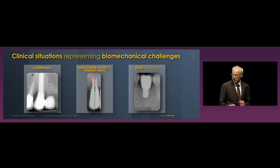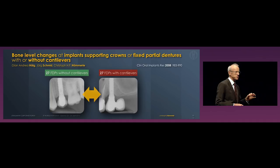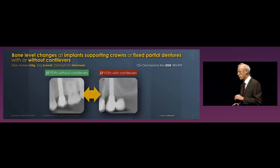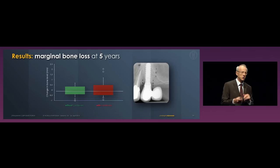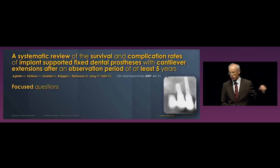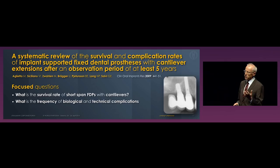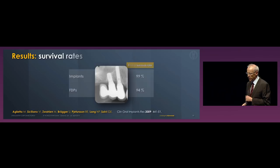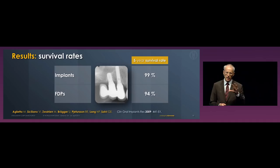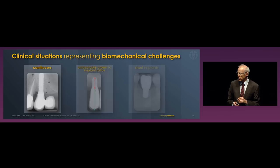John-Andrea Held from our department, in the practice of Jörg Schmid, did a study: 27 fixed dental prostheses with cantilevers compared to 27 without, about five years of observation time. He did not find a difference in survival or marginal bone levels — so no increased bone loss with cantilevers. A systematic review published by Alietta in the study group of Klaus Lang from Bern focused on the survival rate of short-span FDPs with cantilevers, finding 99% survival of implants at five years, with slightly lower survival for reconstructions but no loss of osseointegration. So if you look at the cantilever literature, the conclusion is that there is no loss of osseointegration.